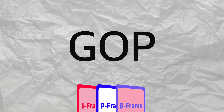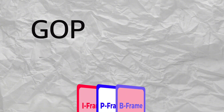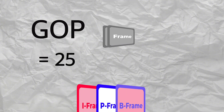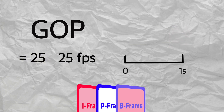GOP, or group of pictures, refers to a complete set of video frames. For instance, if the GOP is set to 25, the encoder will ensure that the first frame of every 25 frames is an I-frame. If the frame rate is also 25 FPS, then the first frame of each second will be an I-frame.